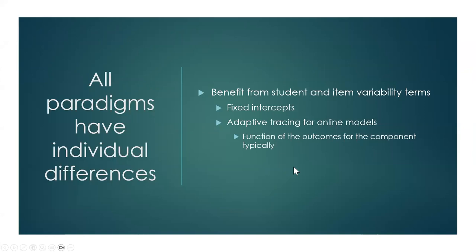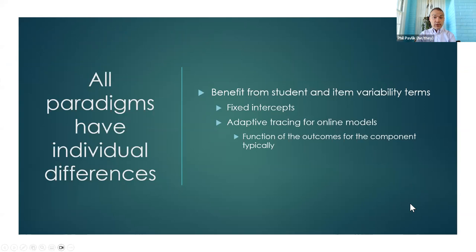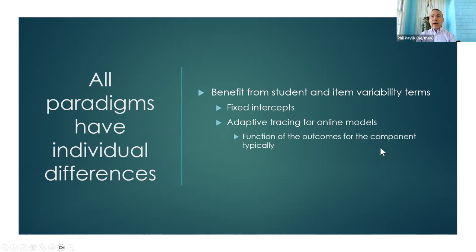All paradigms have individual differences. The two biggest individual differences are for individual students and items — and here I mean KCs. Often we'll fit fixed intercepts, but we can also fit adaptive tracing for student or item variability — in other words, a function of the outcomes for that particular component. For instance, we can have a predictor that says prior percent correct is a predictor of current percent correct.